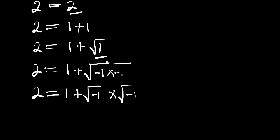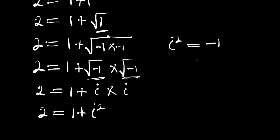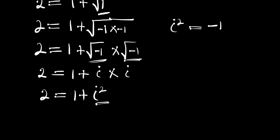So we have 2 equals 1 plus — the square root of negative 1 is simply i, making use of the imaginary number i — times another imaginary number i. So what we have is 2 equals 1 plus i squared. Now i squared equals negative 1, so we are going to replace i squared with negative 1, giving us 2 equals 1 plus negative 1.